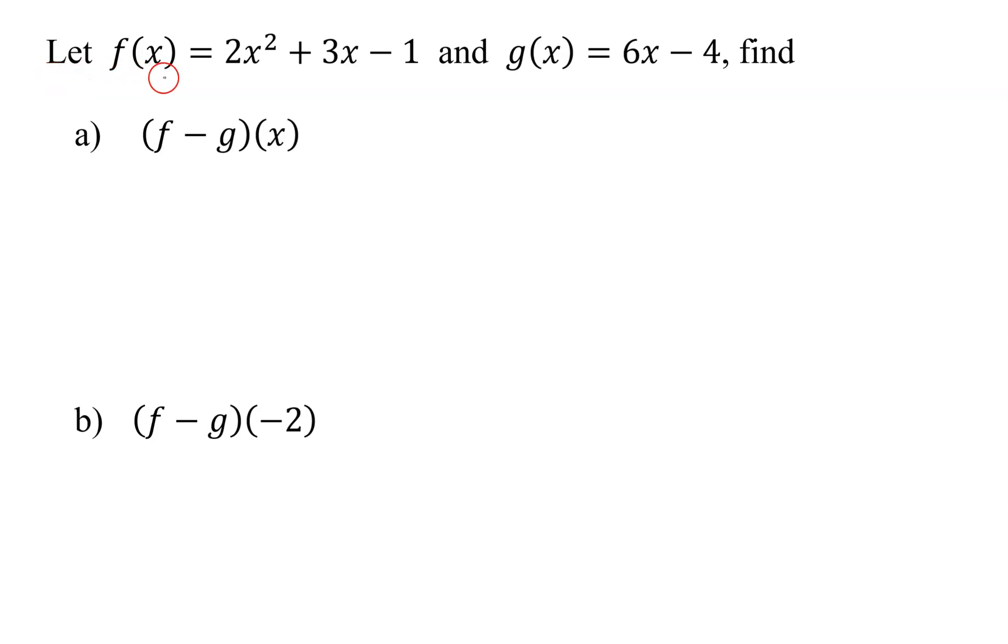In this problem we're given that f(x) equals 2x² + 3x - 1 and g(x) equals 6x - 4. We have to find in part a, (f - g)(x), and in part b, (f - g)(-2).